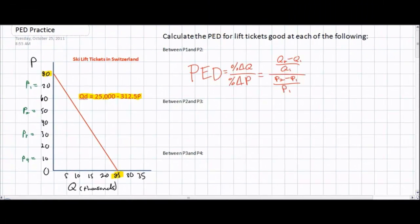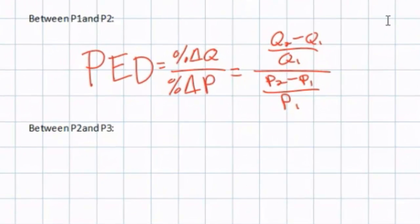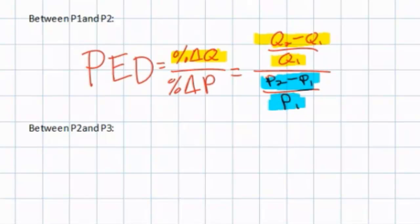To calculate the price elasticity of demand, we must have a few price and quantity combinations to work with. The PED for a particular good measures the responsiveness of consumers to a price change for that good. The PED formula is the percent change in quantity divided by the percent change in price. If we have two prices and two quantities, we can find the PED using the formula on the right: Q2 minus Q1 divided by Q1 gives the percentage change in quantity, and P2 minus P1 divided by P1 gives the percentage change in price.